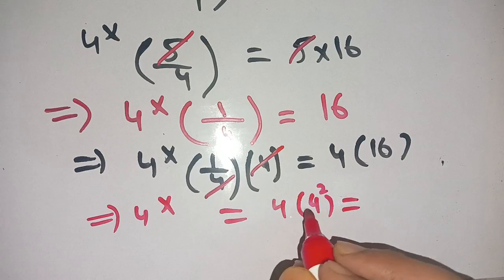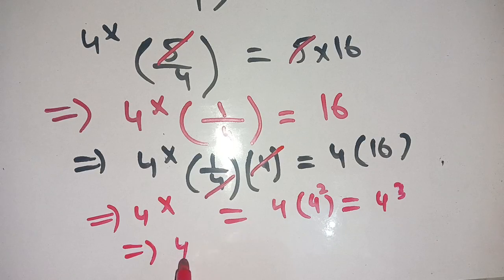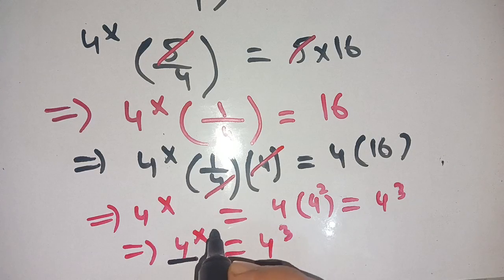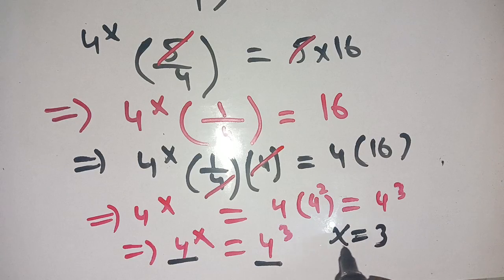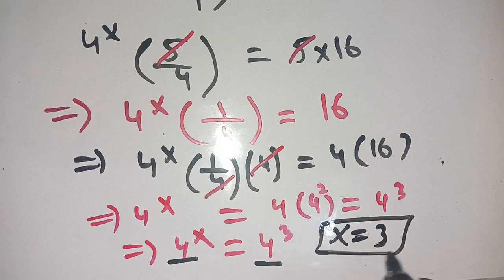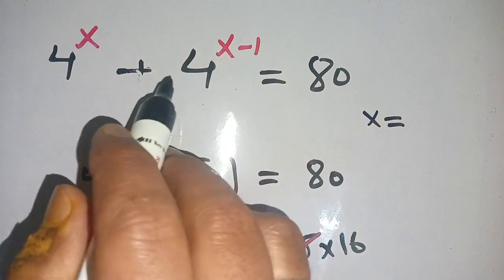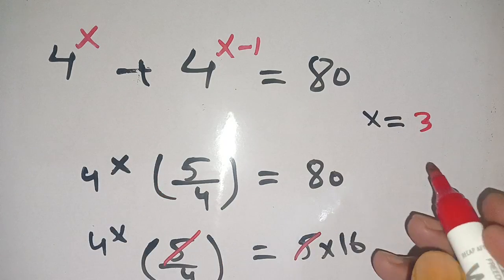So we have 4^x = 4^3. Since the bases are the same, we can compare the exponents, giving x = 3. This means x = 3 satisfies our equation 4^x + 4^(x-1) = 80. Thus the value of x is equal to 3.